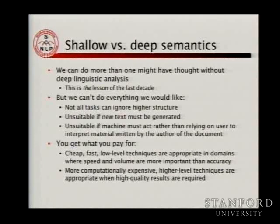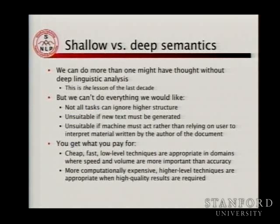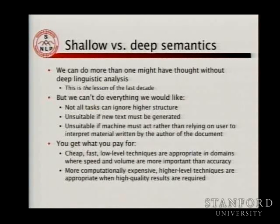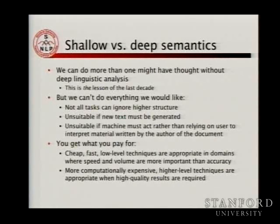If you look back on the history of AI, it seemed completely obvious to people in the 1970s that if you were going to do anything useful with natural language processing, you had to have deep semantic representations. But the most dramatic thing in summary of the last decade is that people have shown you can get amazingly far in producing useful artifacts by understanding almost nothing. Low-level processing techniques are appropriate when you want to deal with speed and volume.